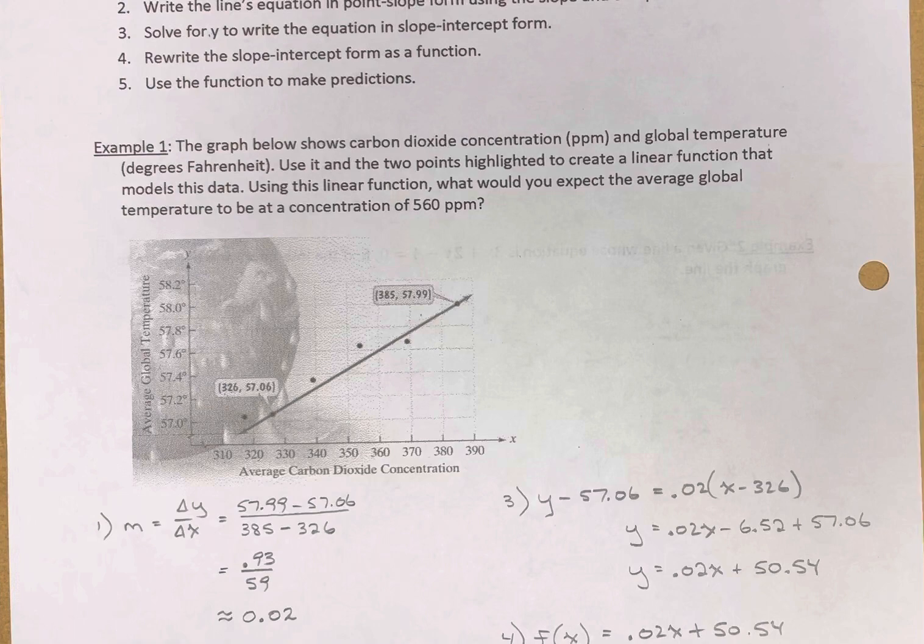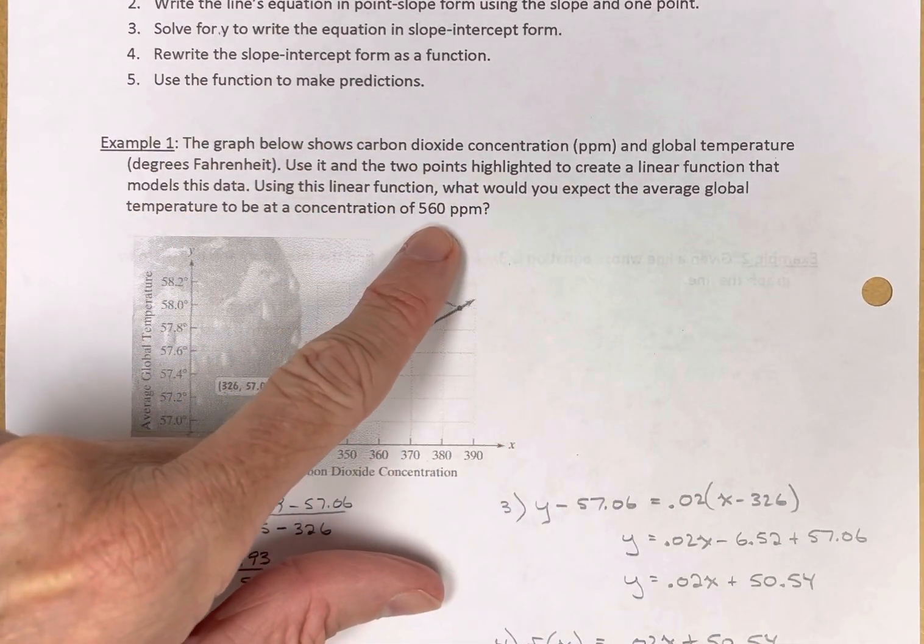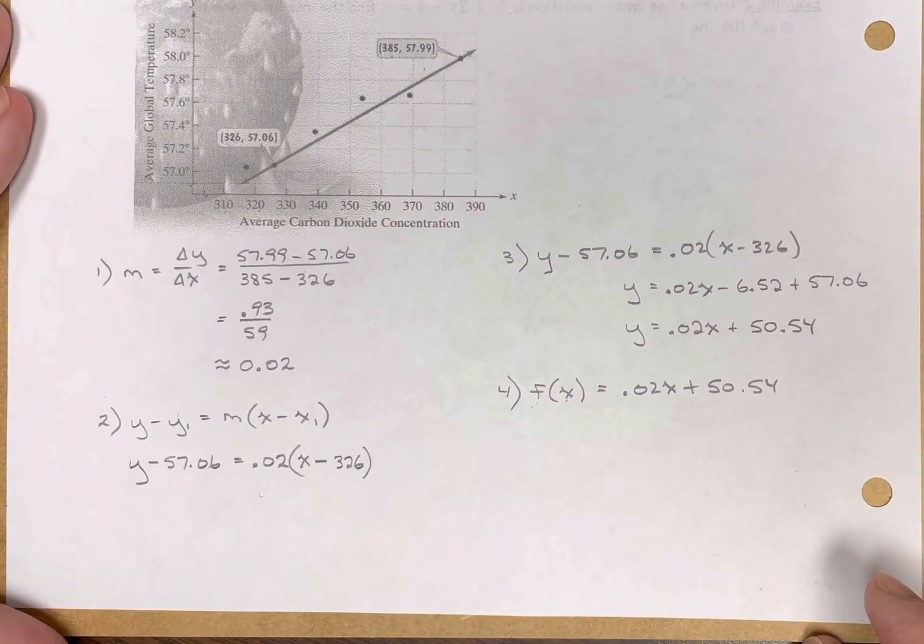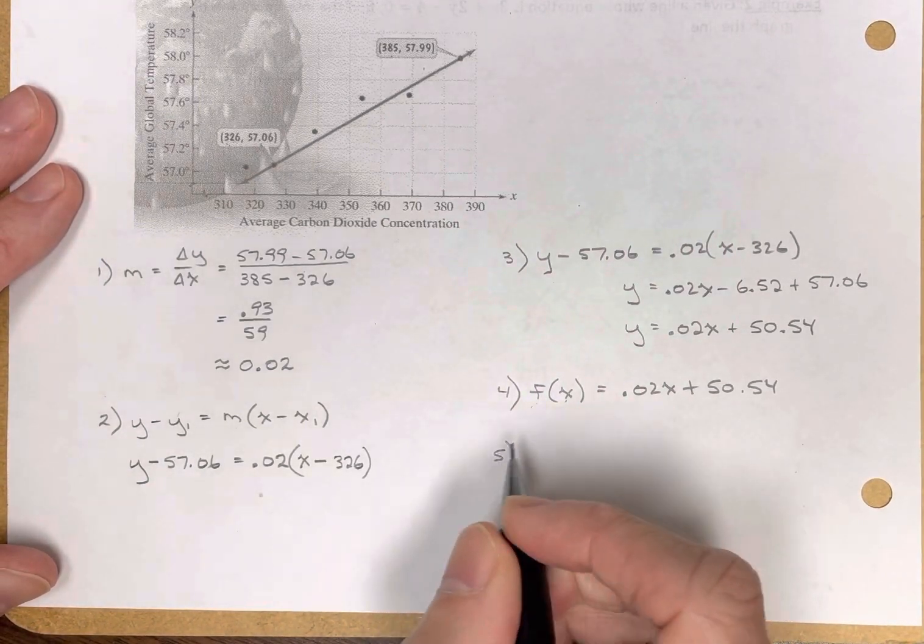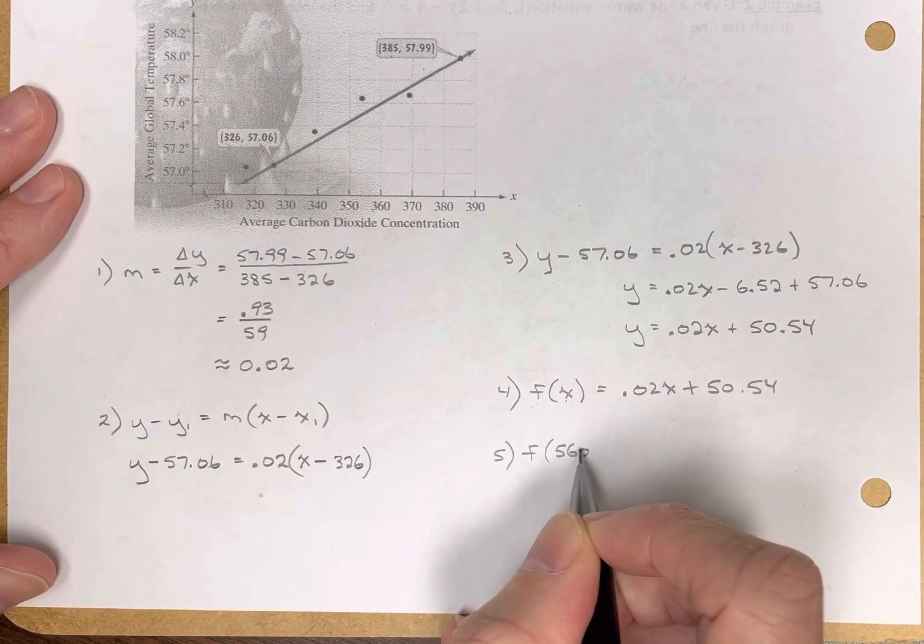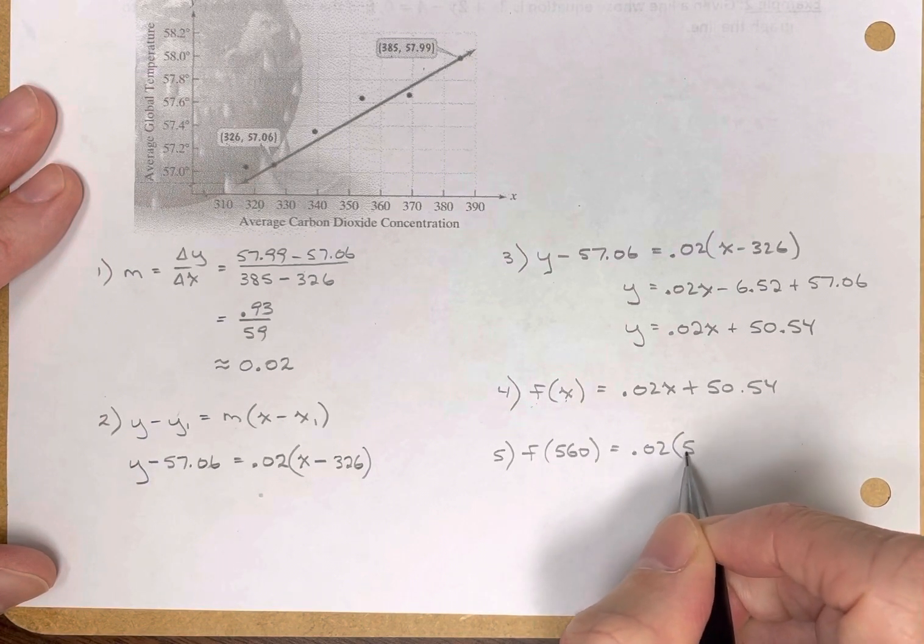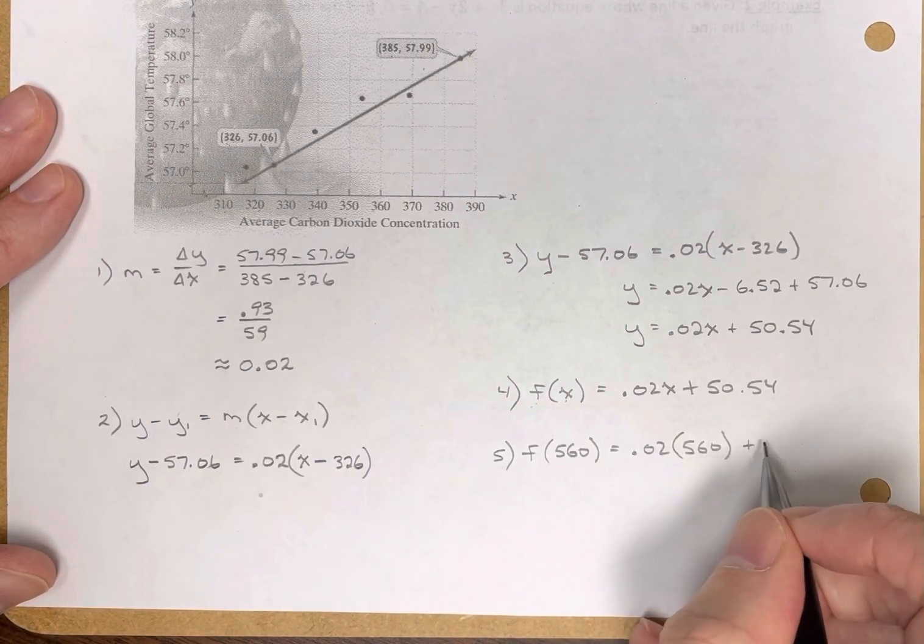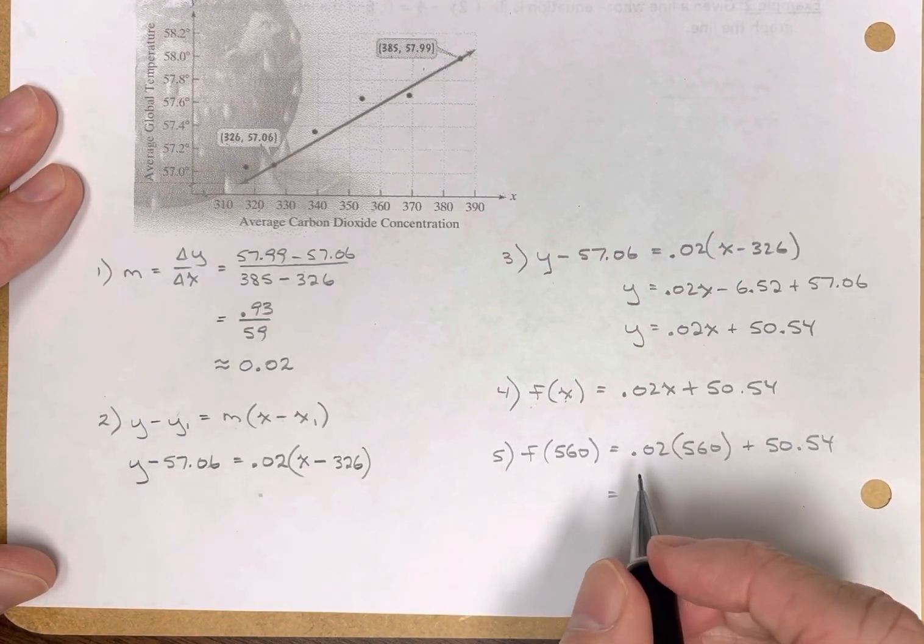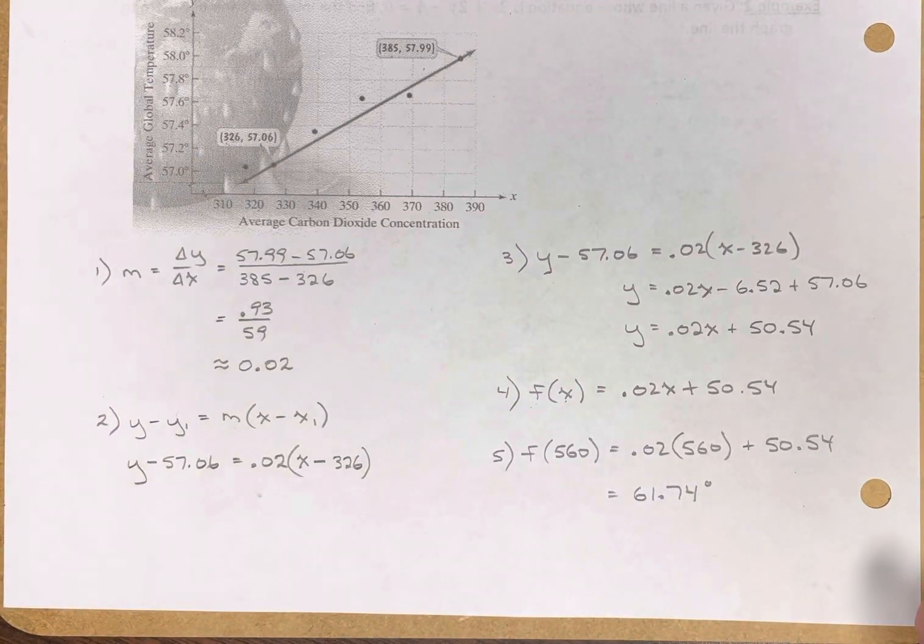So step number five here, let's use the function to make a prediction. We want to know, what's the temperature when we hit 560 parts per million? Five. What is f? What's the value of the function when the input value, the x value is 560? Well, I'll substitute 560 in and I always almost always use parentheses when I substitute. And then I'll do the math with a calculator. And I have 61.74 degrees. So there you have it.